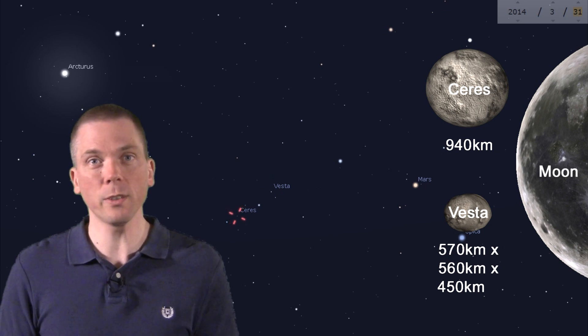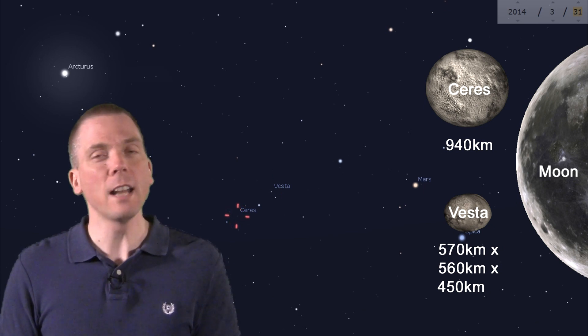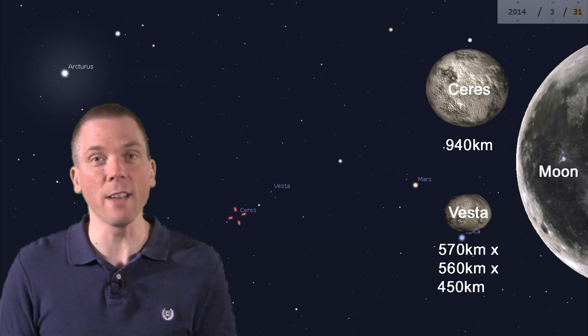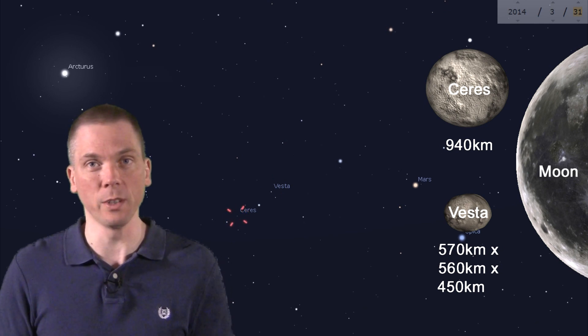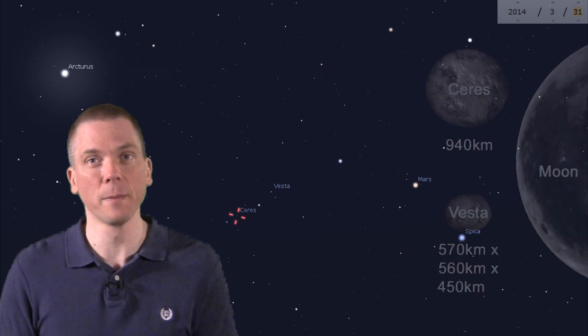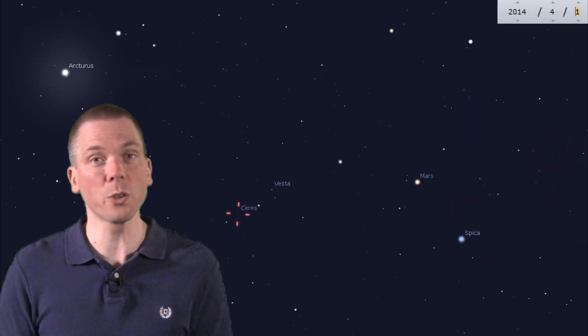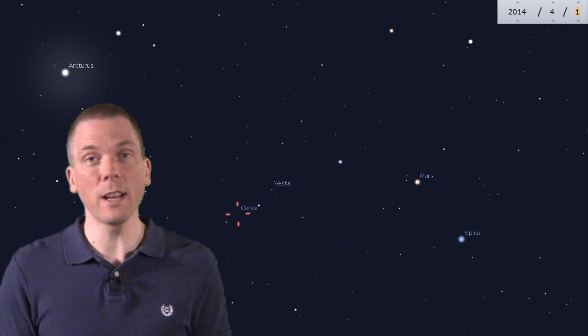Ceres, though larger, is a bit farther away. Vesta is about 1.25 AU from Earth right now, while Ceres is 1.6 AU, over 20% more distant. Because of this, despite its larger size, Ceres looks fainter from Earth.